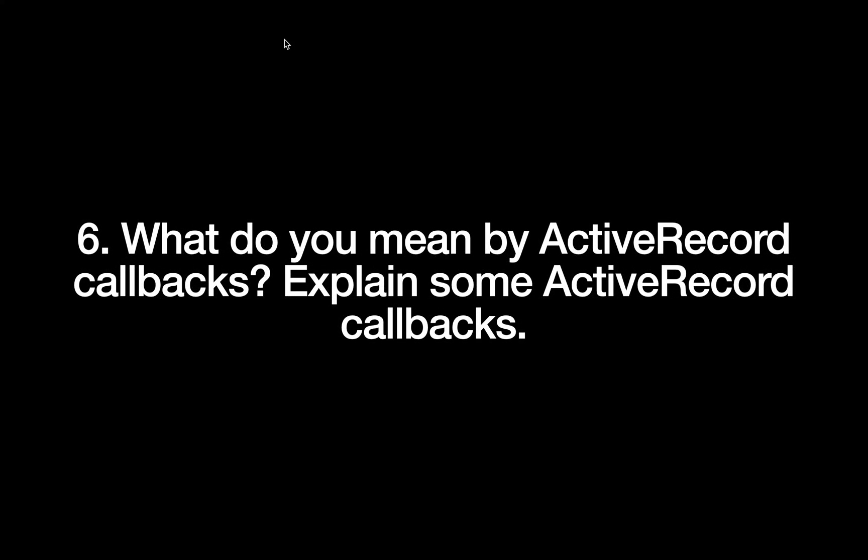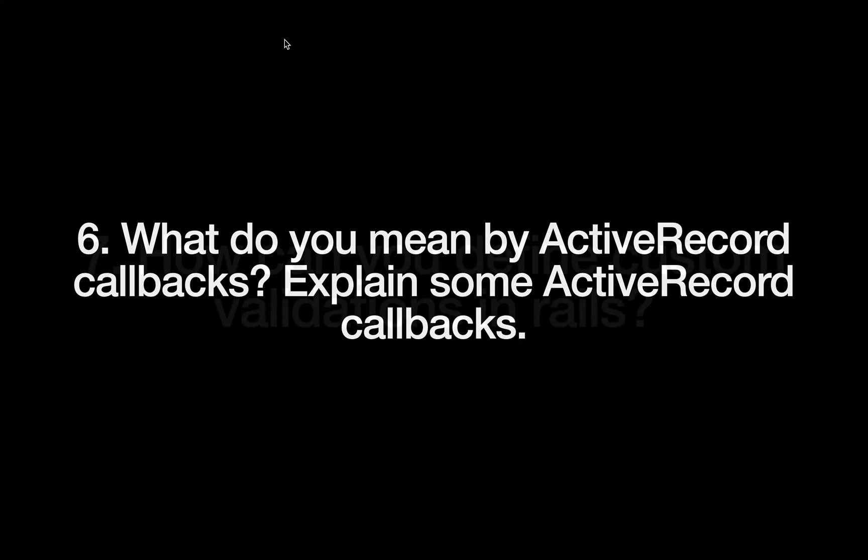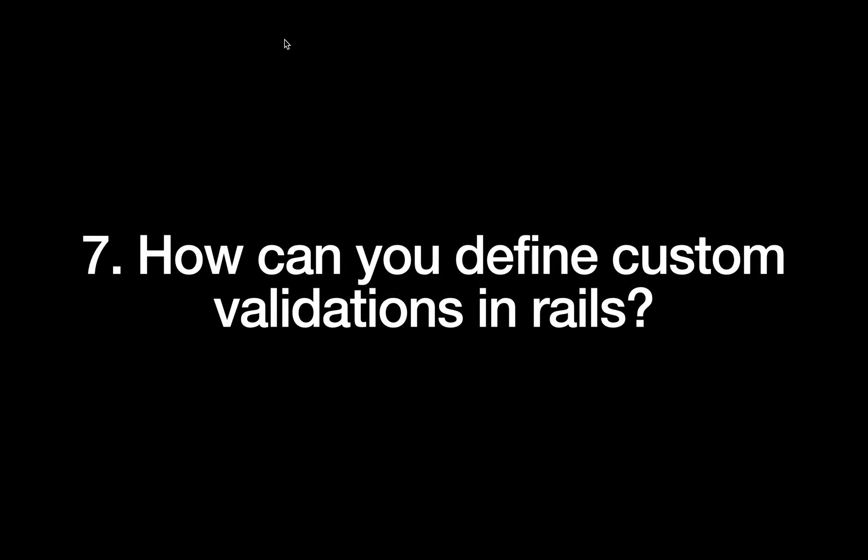What do you mean by Active Record callbacks? Explain some Active Record callbacks with examples. How can you define custom validations in Rails?